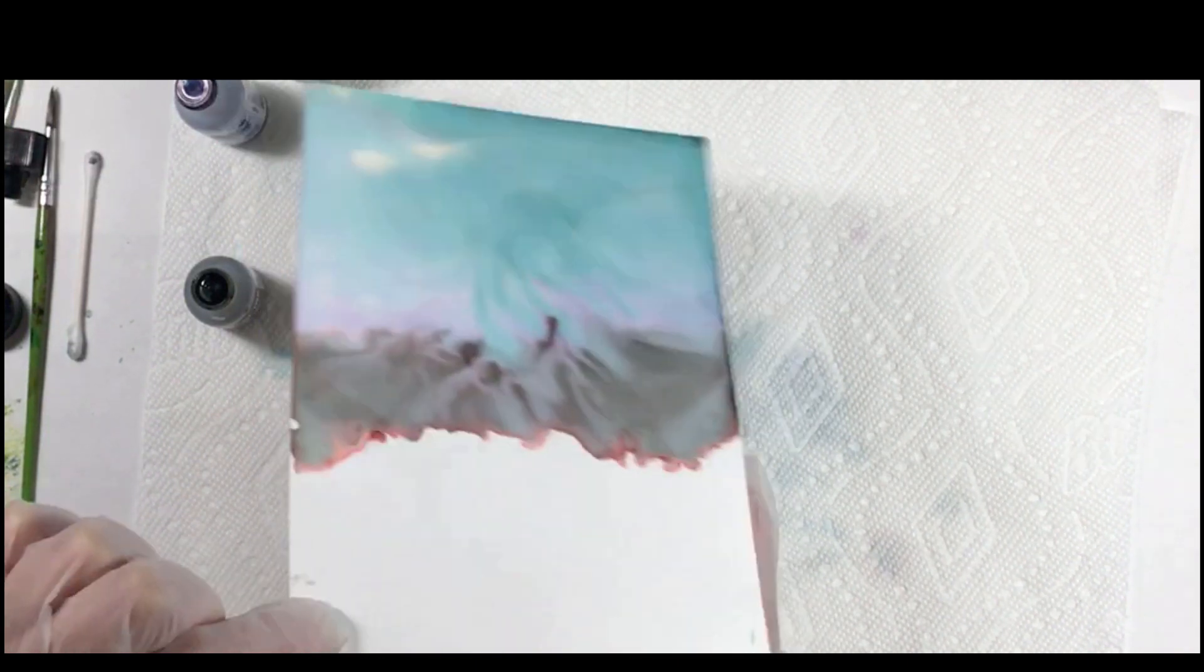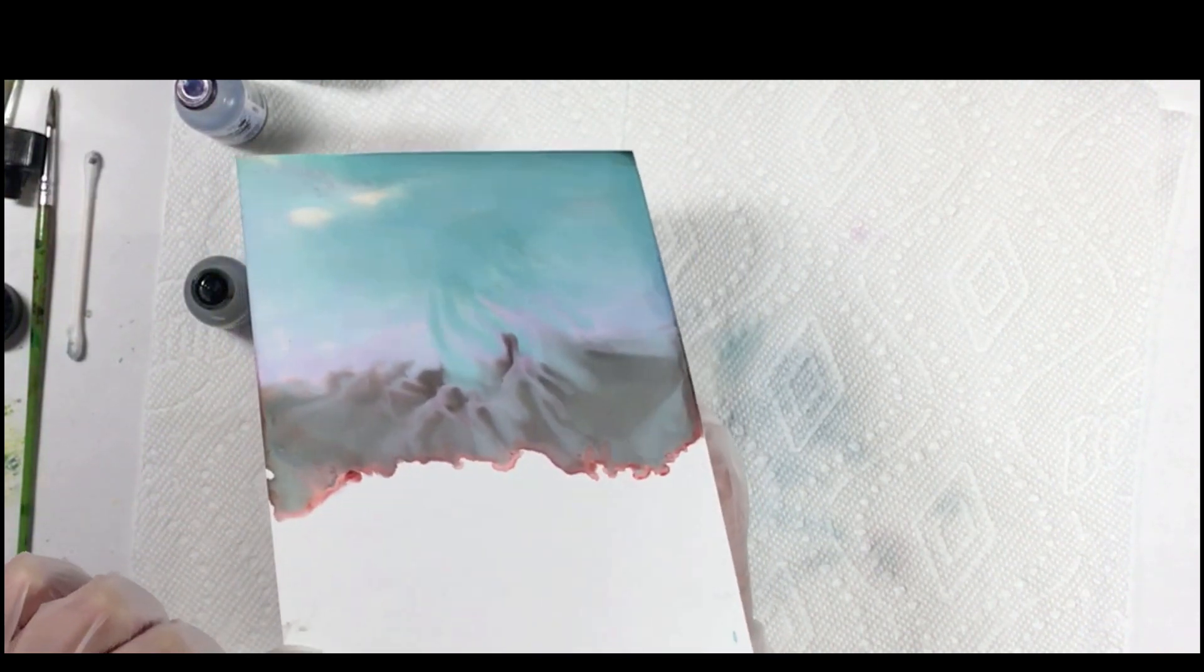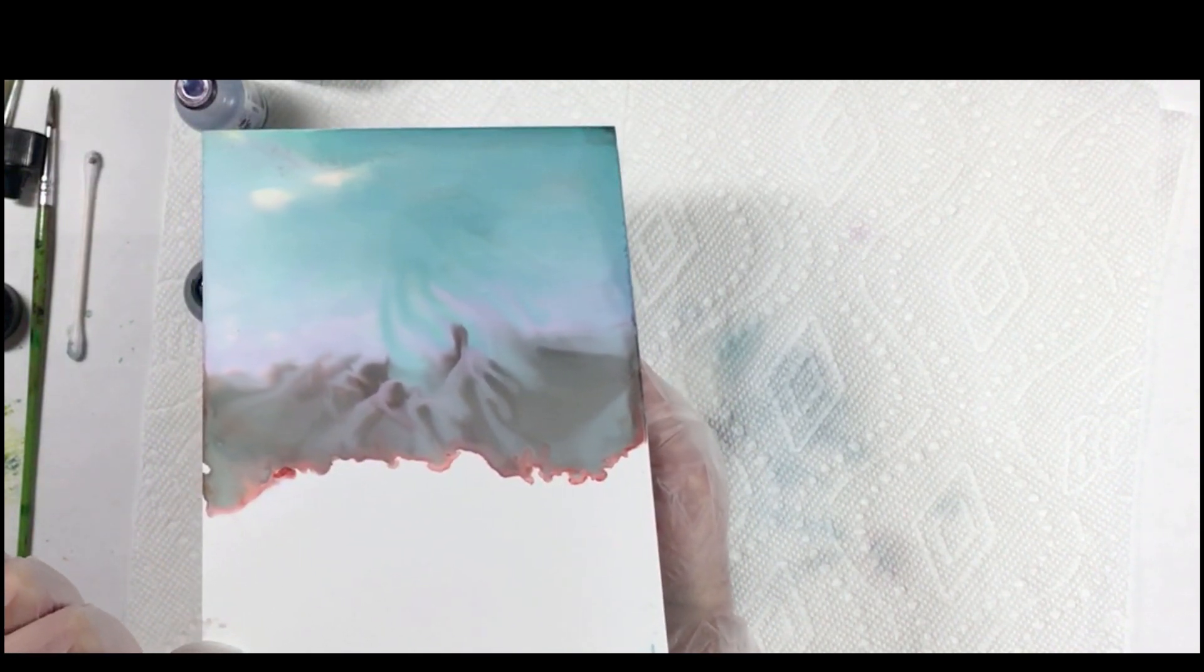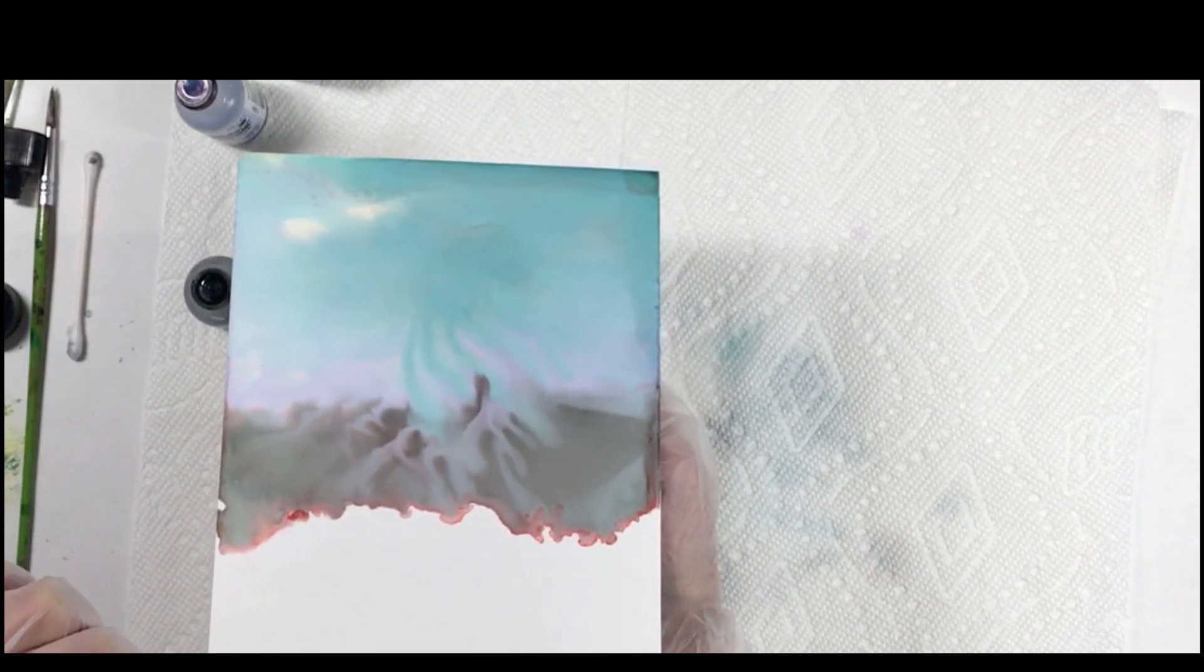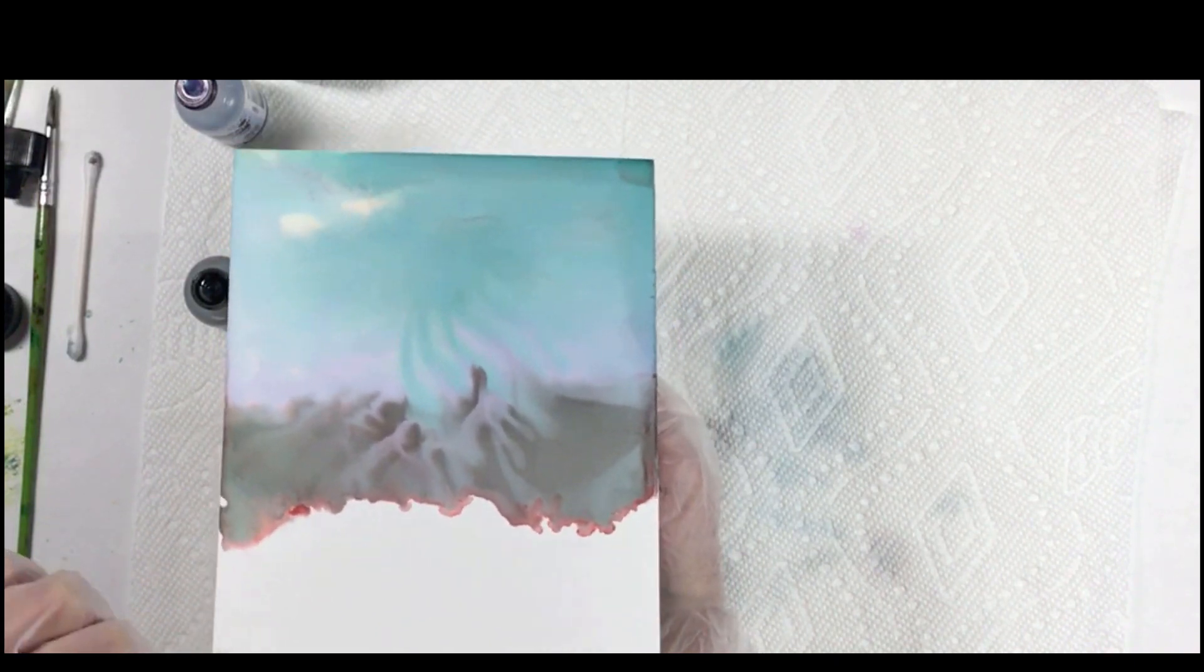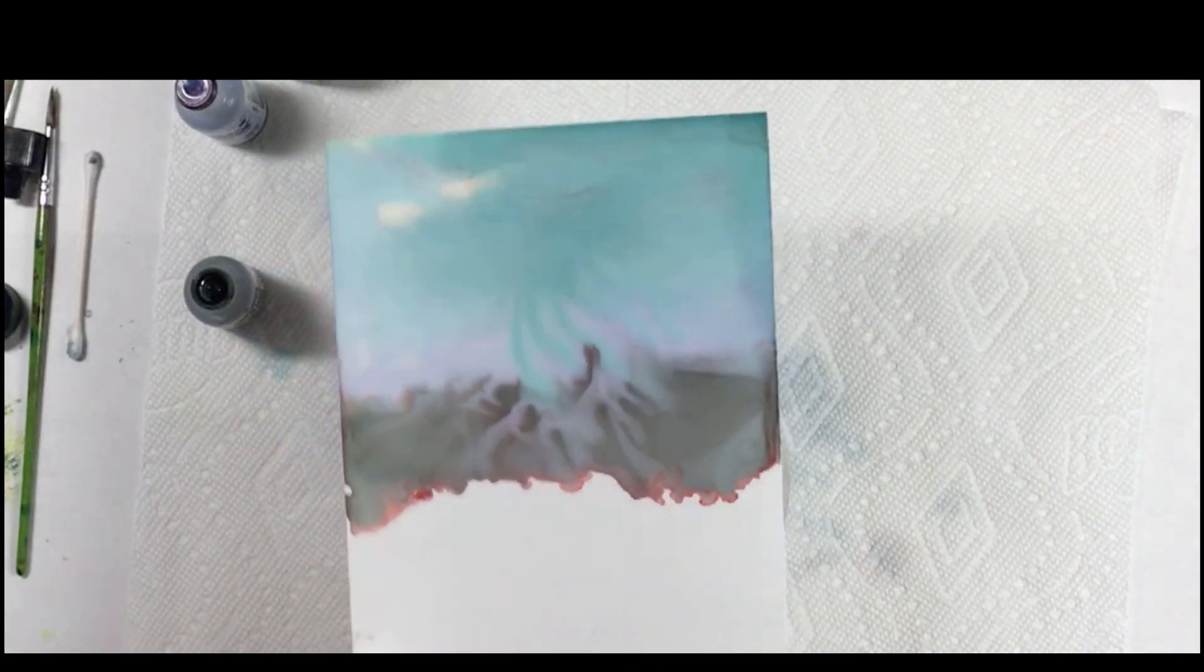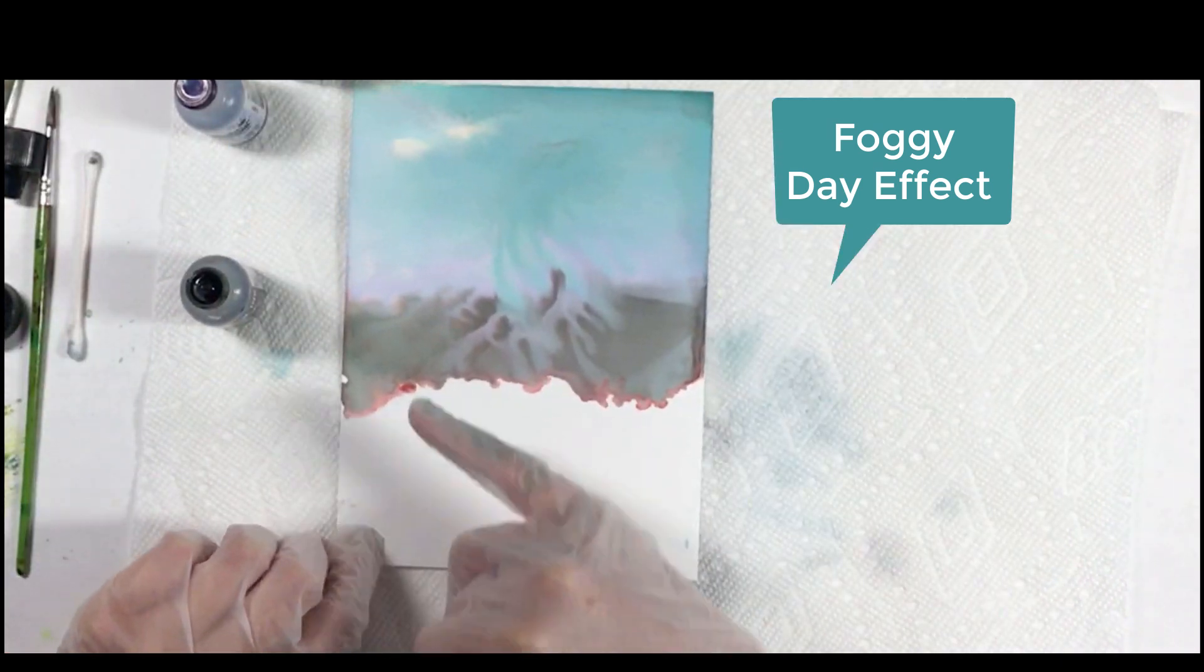So this is a design I would never be able to do again because it's all dependent on the inks and the temperature and the humidity and the amount of blending solution. But you get the idea by starting with the cloudy blue then the cool peri and then the slate how you can get that effect of mountains in the background on a cloudy day.